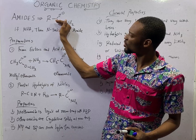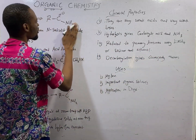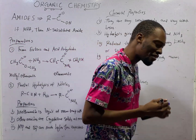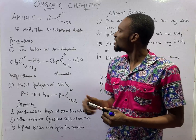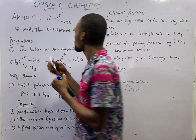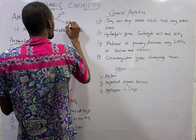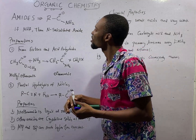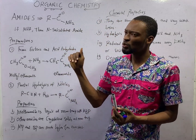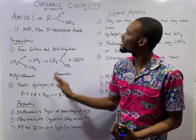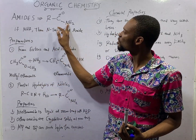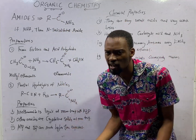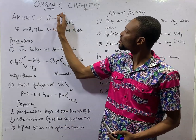If you look at this functional group, you will see that amides are formed when the OH group in acids is replaced by NH2. So it is derived from acids. Amides are also different from amines in the sense that for amines, it is an alkyl group directly to NH2 — there is no O. Amides are also carbonyl compounds; they have the C double bond to O.